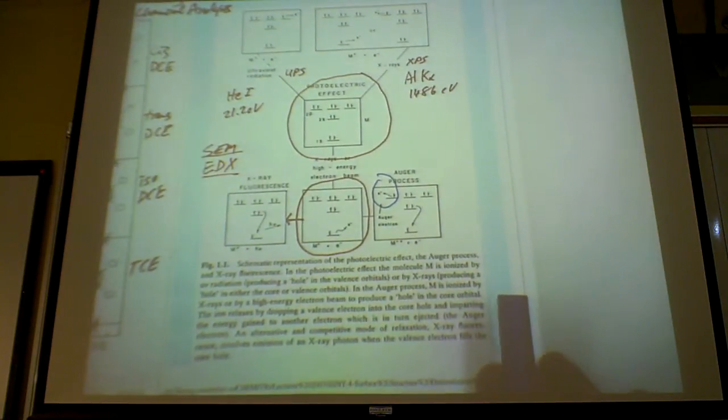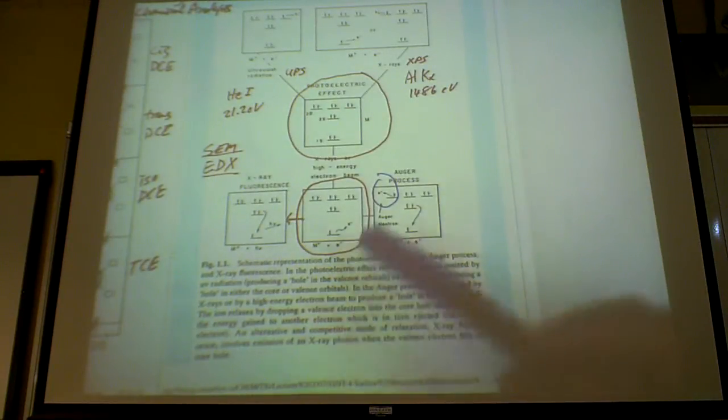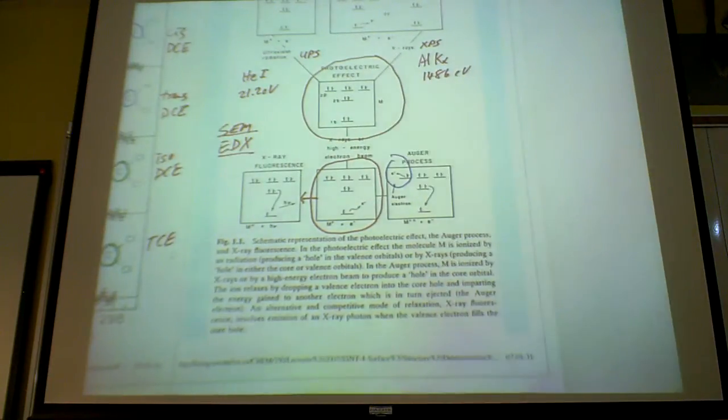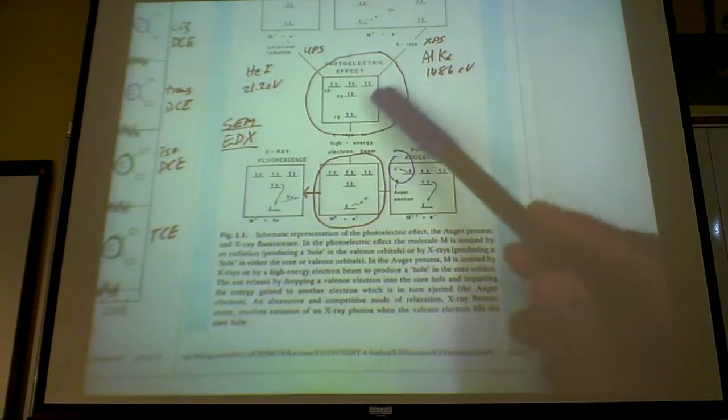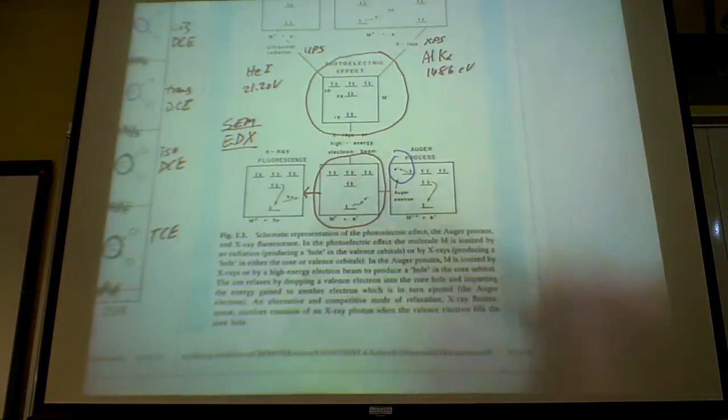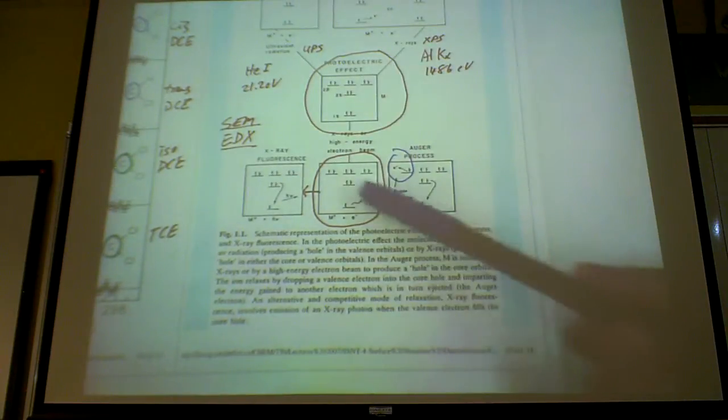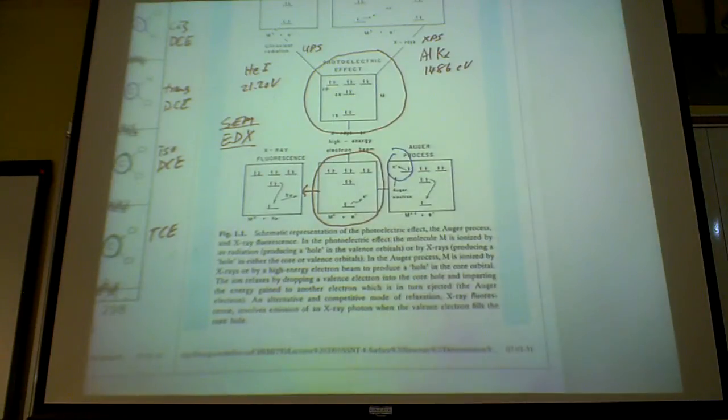And we mentioned last day as well about these emissions, so you have the ground, the electronic states here, it's indicated by M, which is the neutral state. You ionize this neutral state, neutral molecule if you like, and let's say you remove one electron from the 1s electron here, this electron comes out,